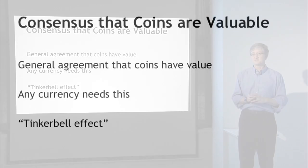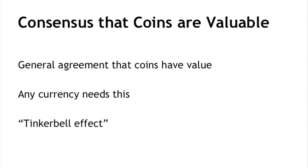The third form of consensus that Bitcoin relies on is simply the consensus that coins are valuable — the general agreement that Bitcoins are valuable, that Bitcoins are a good thing to have, and in particular the consensus that if somebody gives you a Bitcoin today, tomorrow you'll be able to redeem or trade it for something of value. Any currency needs this, whether it's a fiat currency like the dollar or a cryptocurrency like Bitcoin.